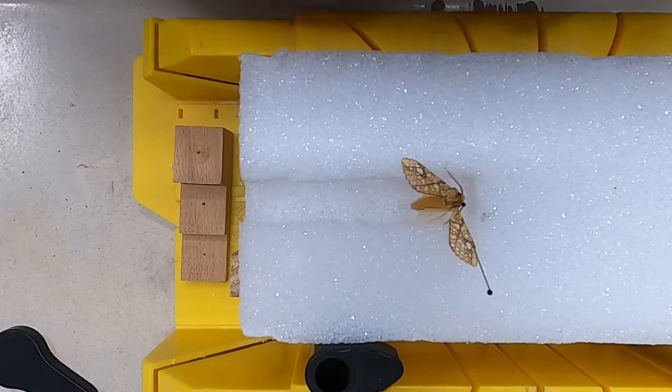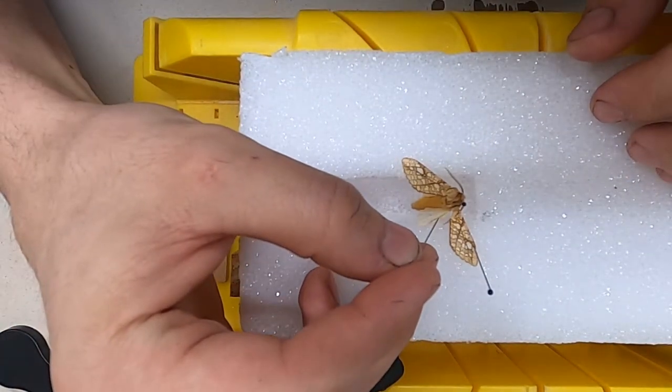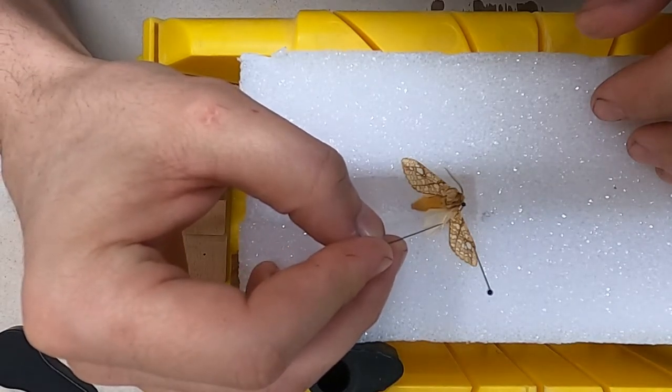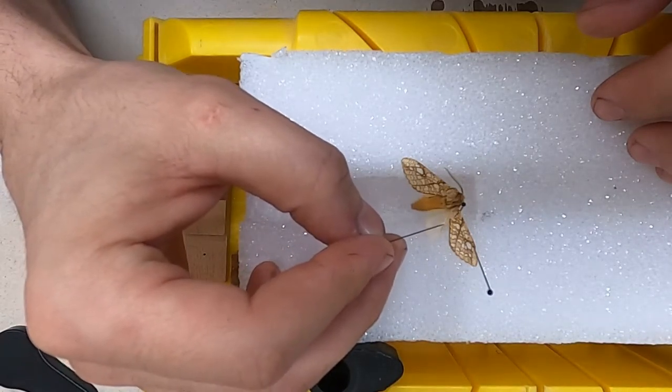The secondary wing needs to be extended out so that the front edge of the secondary wing is sitting just under the back edge of the main wing.